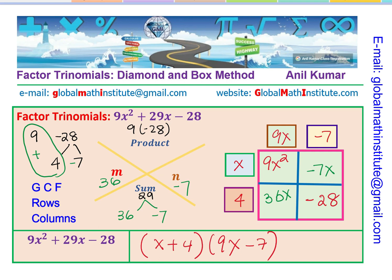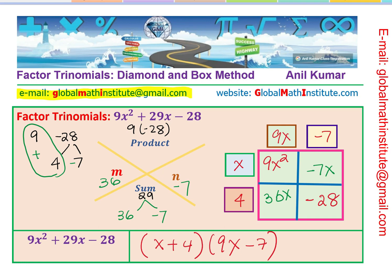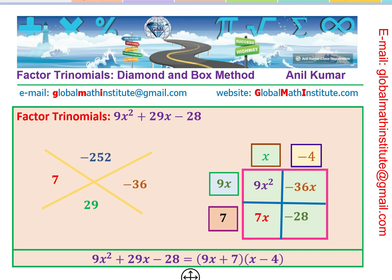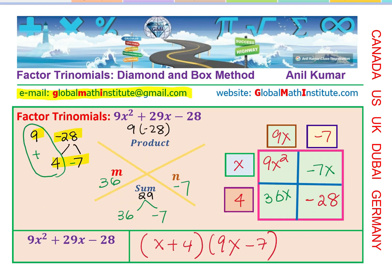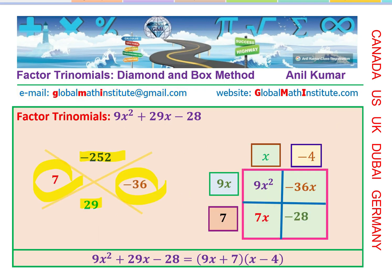The second tip: use prime factorization of the a and c values rather than multiplying them together to find factor pairs. If you had multiplied, you'd face −252 with a sum of 29 — extremely difficult. Factoring the individual numbers first makes finding m and n much simpler. The answer is (x + 4)(9x − 7).